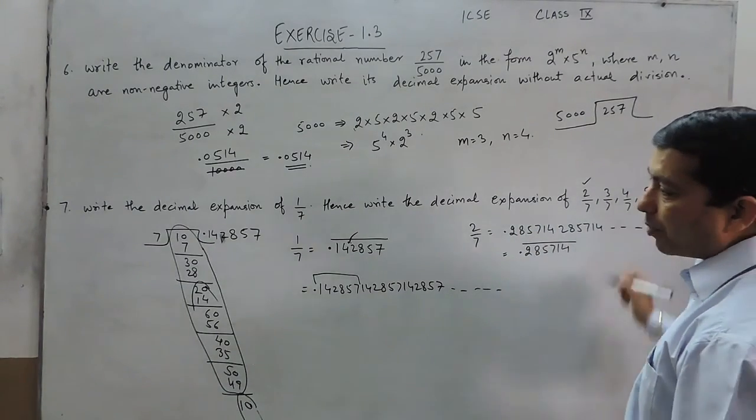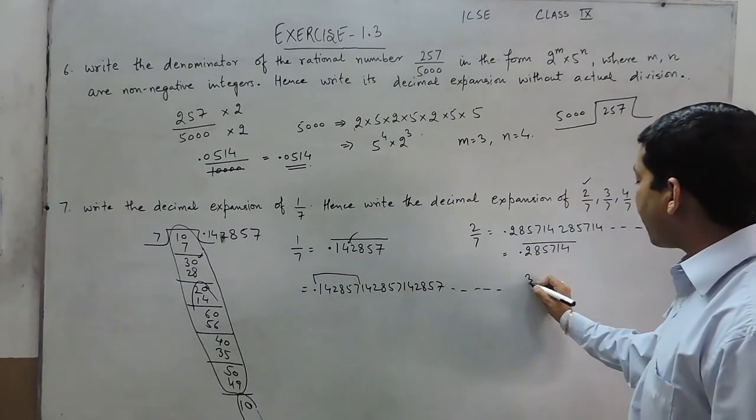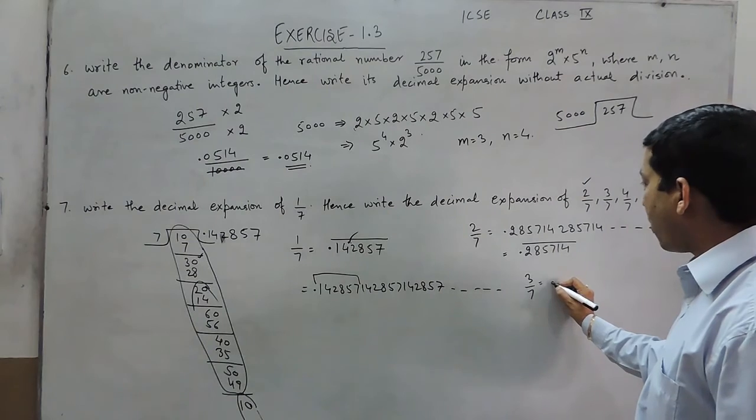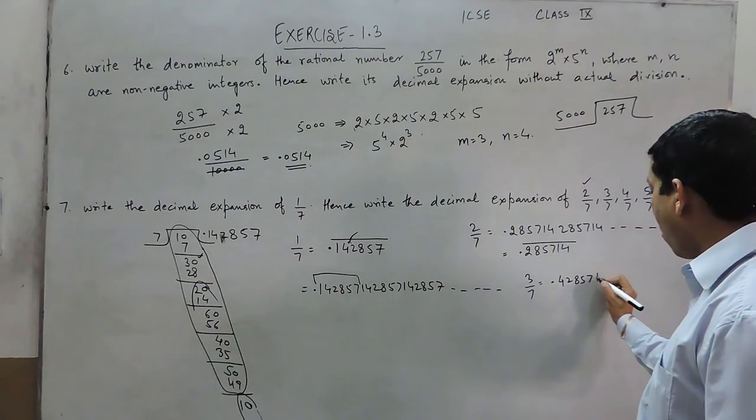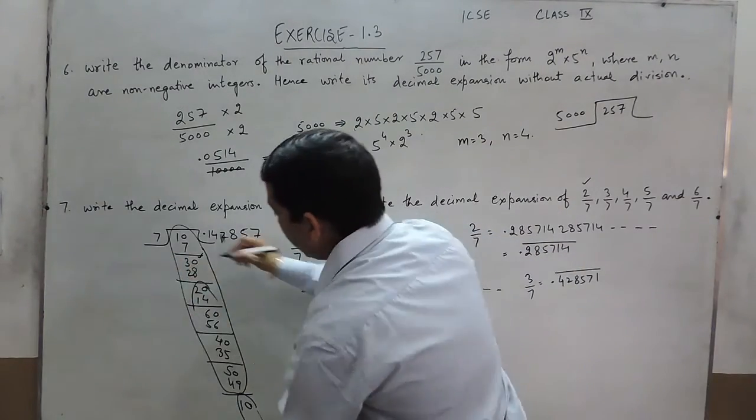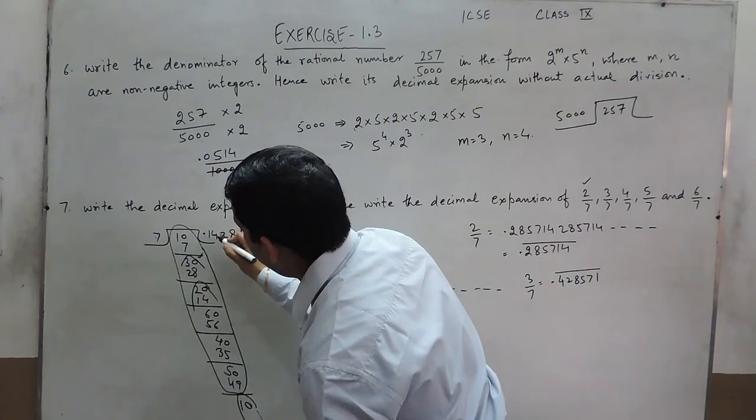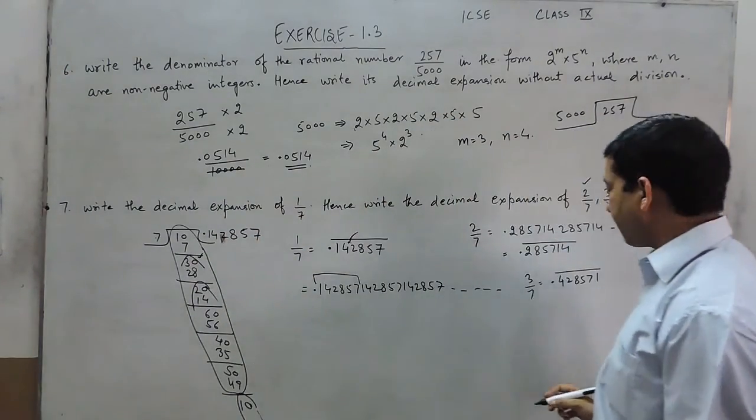When I talk about 3 upon 7, that means the process will start from here. So 3 upon 7 can be written as 0.428571. Because if in case we start from here, then 0.428, so the process will start with 4 not with 1.